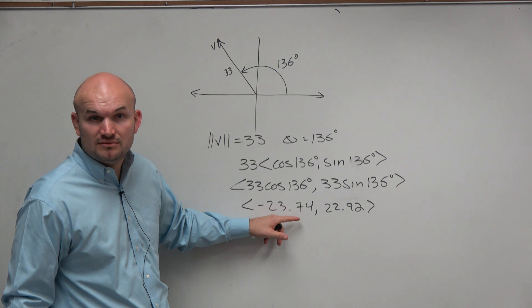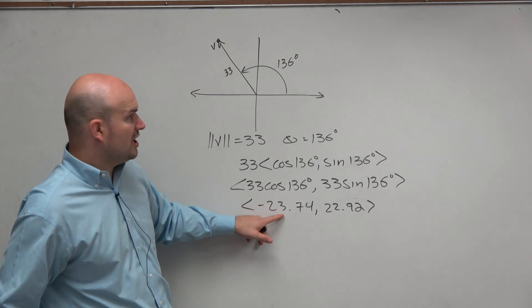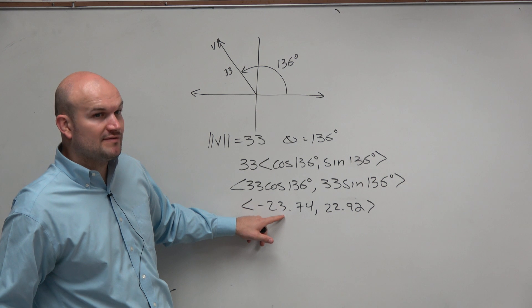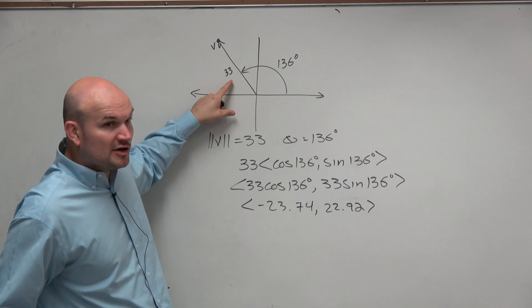Let's kind of make sense of this. We should always go back and check our answer and make sure the numbers make sense. Should our x-coordinate be negative by looking at this graph? Yeah. Should our y-coordinate be positive? Should they be smaller than 33?